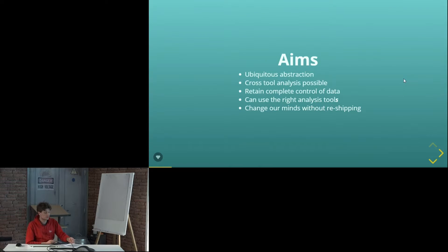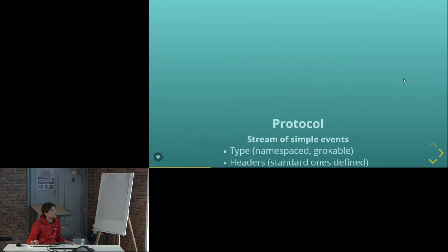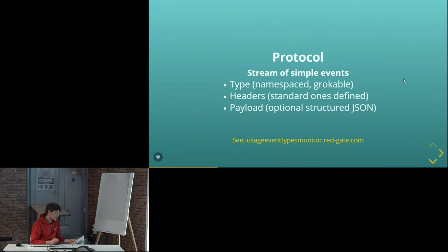And that means we can change the way we deal with the data without shipping and uptake woes. So the conceptual parts of it are the protocol, which is super simple. Then the data is divided into streams — I won't talk about the client library. And then a little bit about some of the server-side stuff. The actual protocol is really quite trivial. The data is broken down into events. Events have a namespaced type, a bunch of headers which are just string key-value pairs, and a payload which is optional — it's a JSON object which can contain structured nested data. The type is intended to be namespaced and should be understandable by people even if they're not on the tool team.